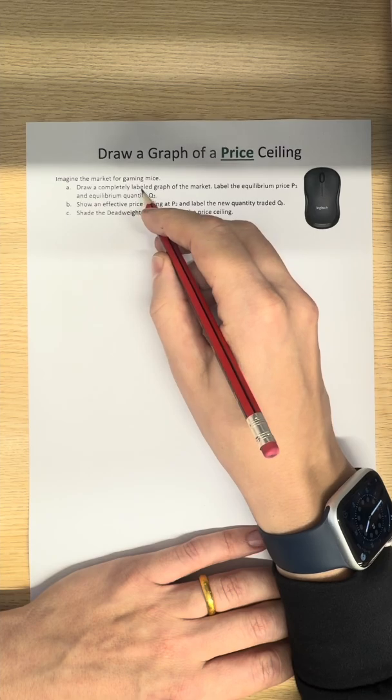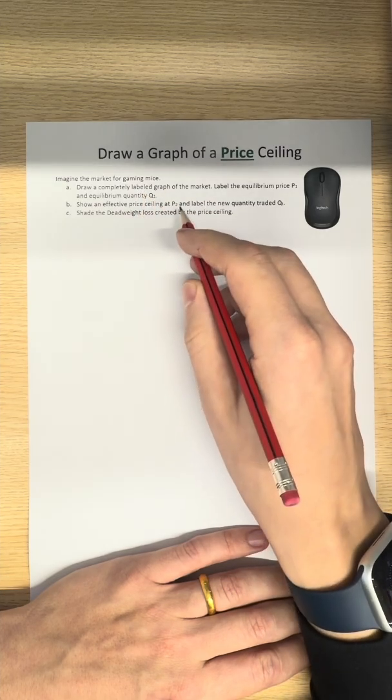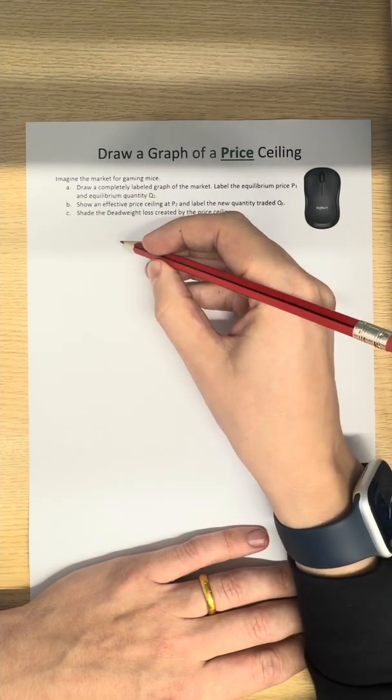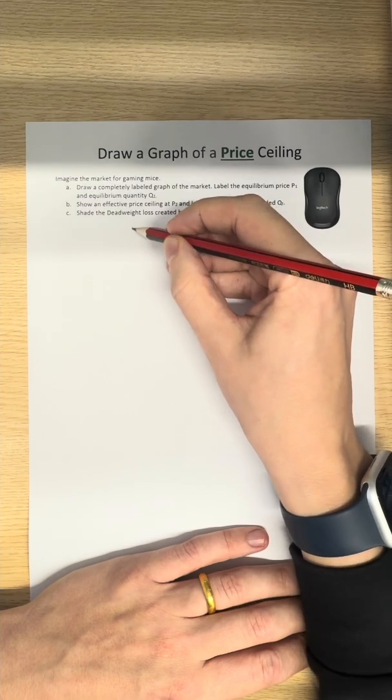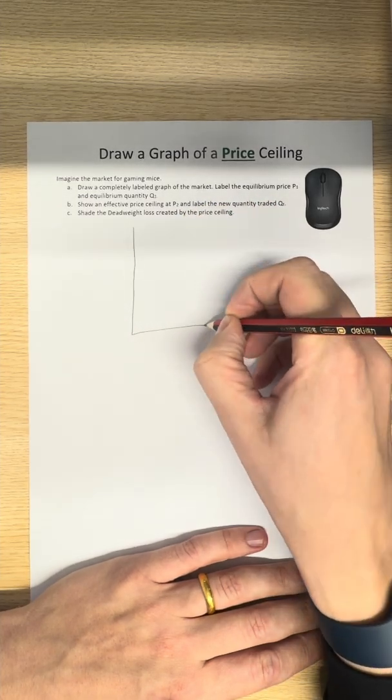We're going to draw a completely labeled graph of the market for this wonderful gaming mouse. Let's label the equilibrium price P1, equilibrium quantity Q1. Easy peasy.